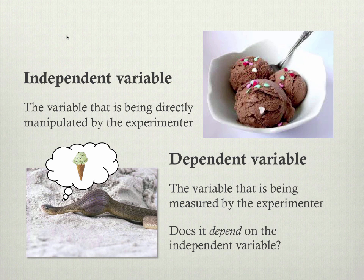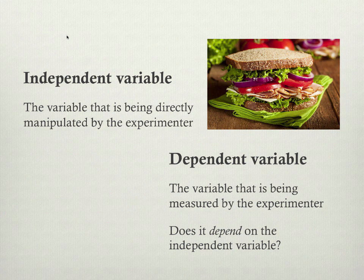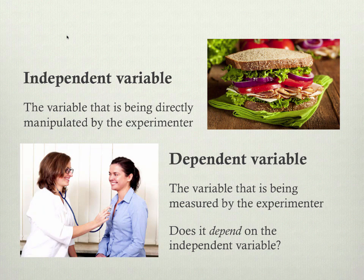The dependent variable is the one that we think might be dependent on the other variable — might be caused to change by the other variable. So if this were the study of vegetarianism, then the independent variable would be diet type, and the dependent variable would be your health. We're going to directly manipulate the kind of diet that you have and then see what your health outcome is. This would be a way of going beyond a correlational study and turning it into an experiment.